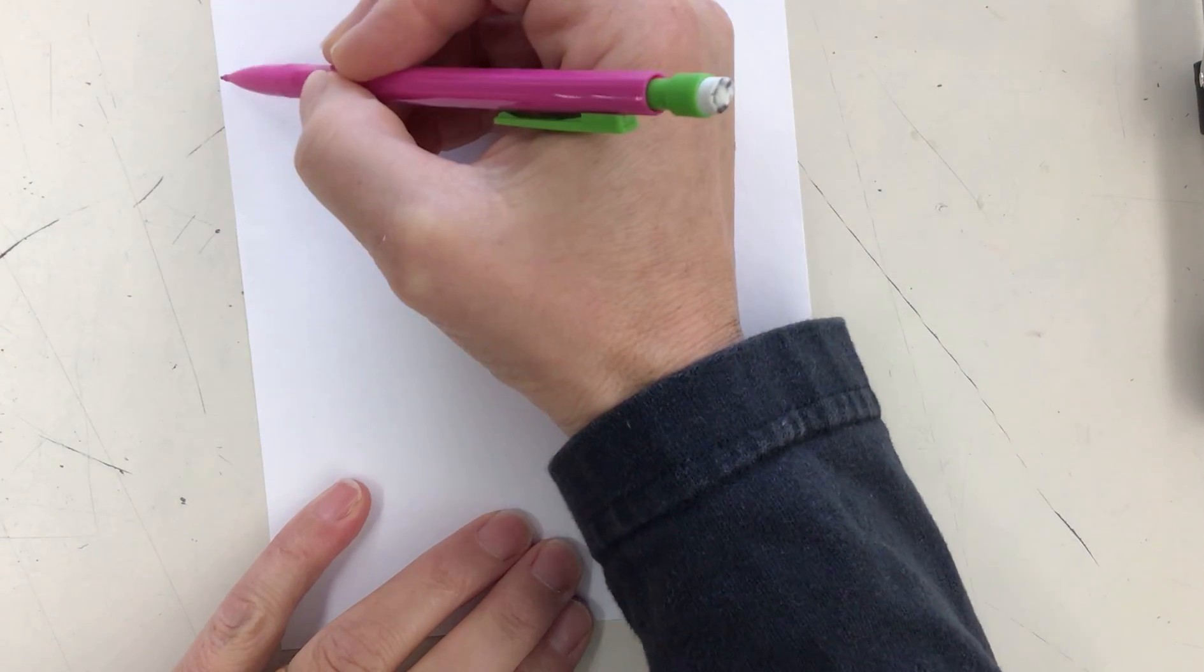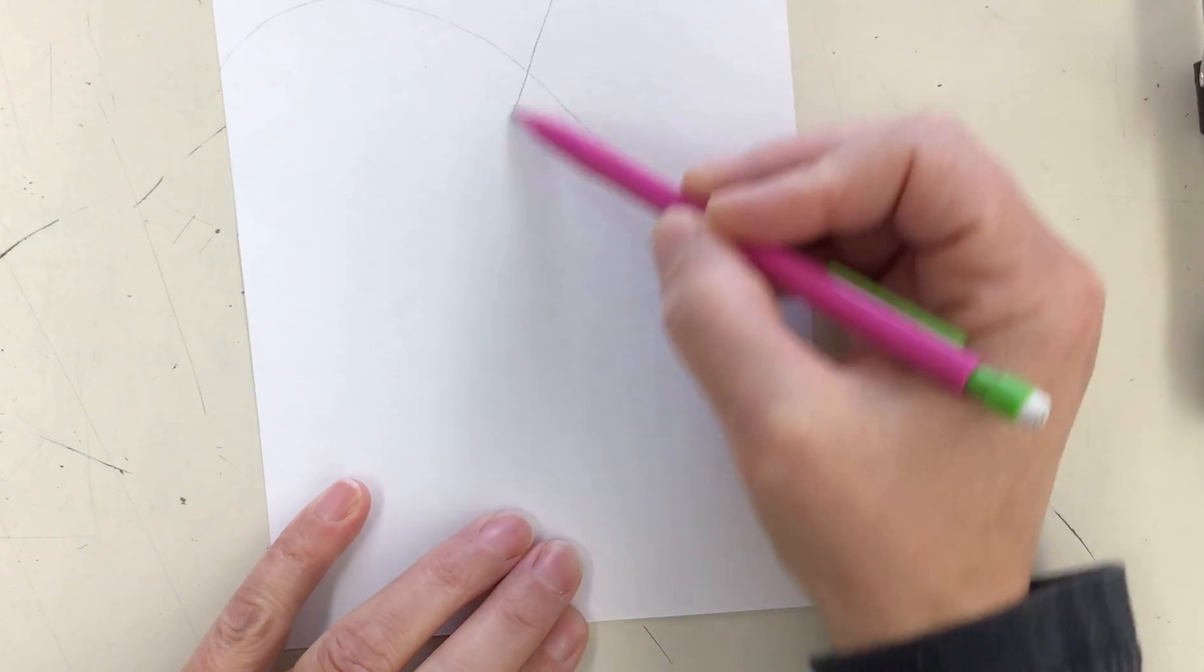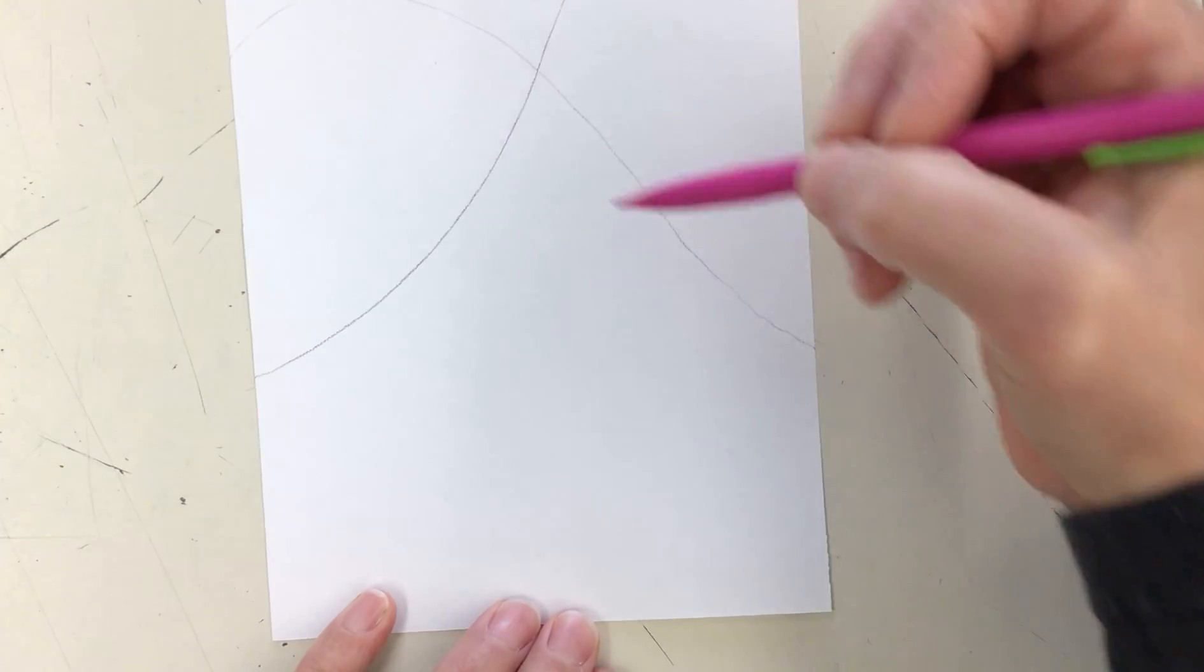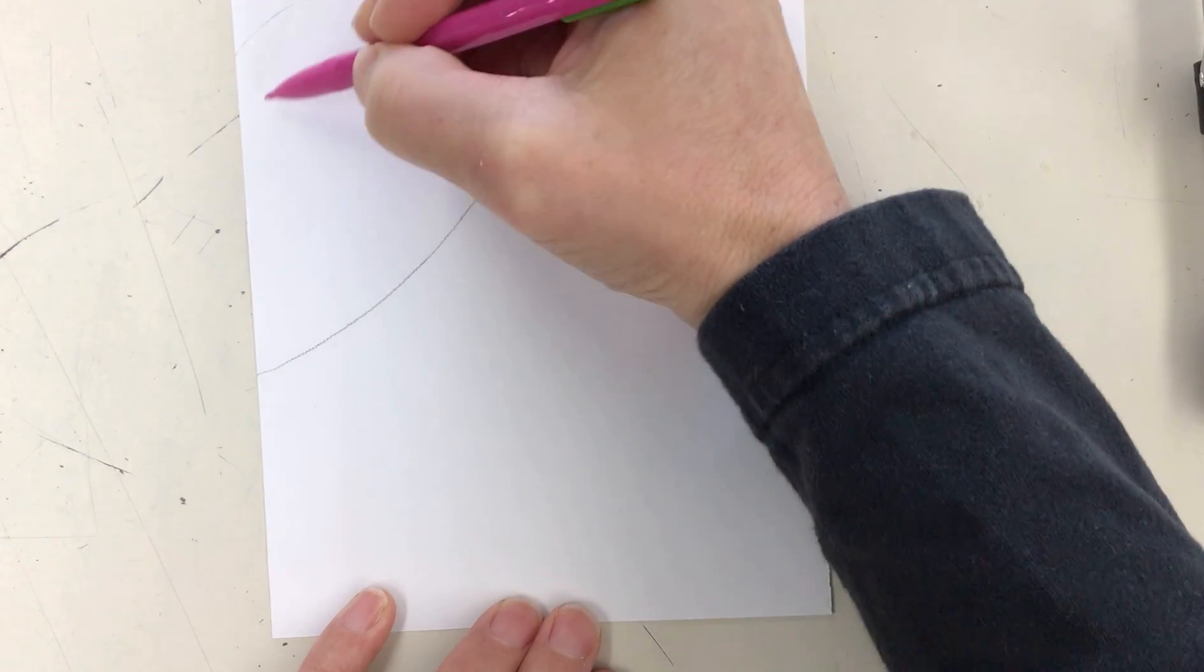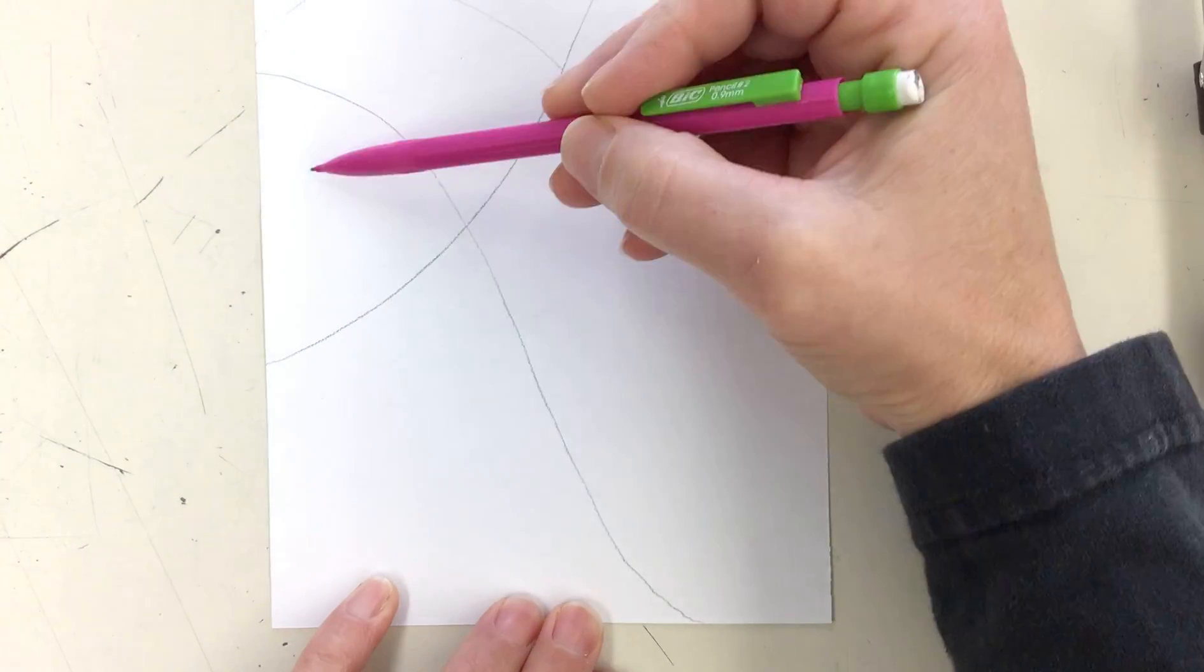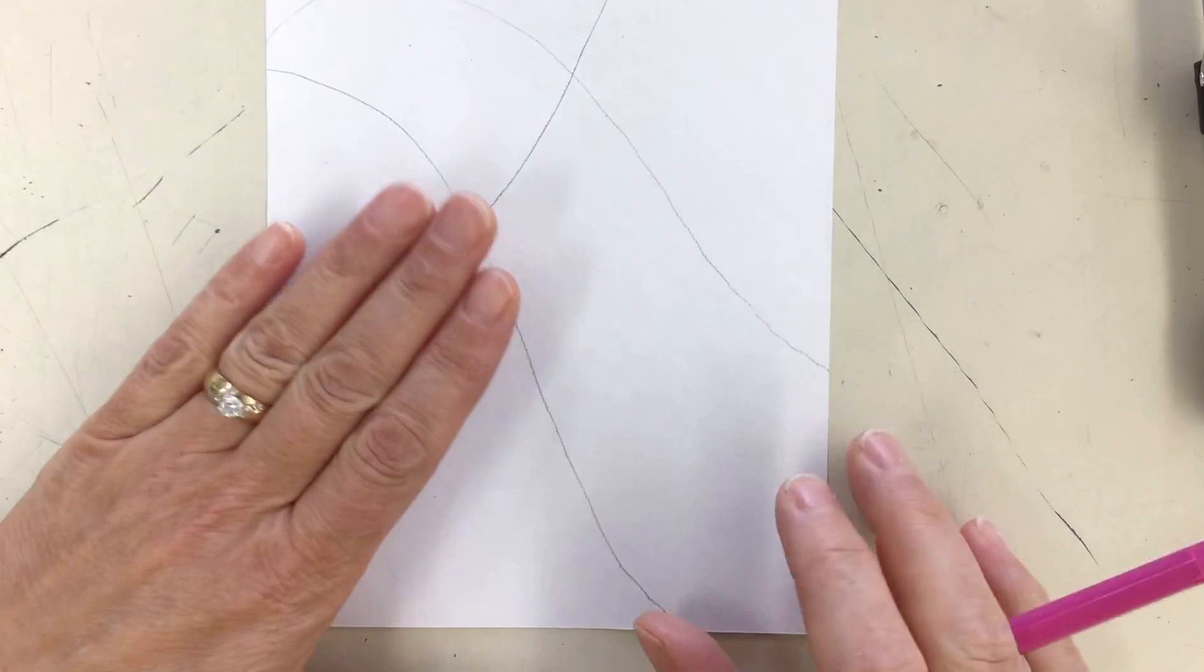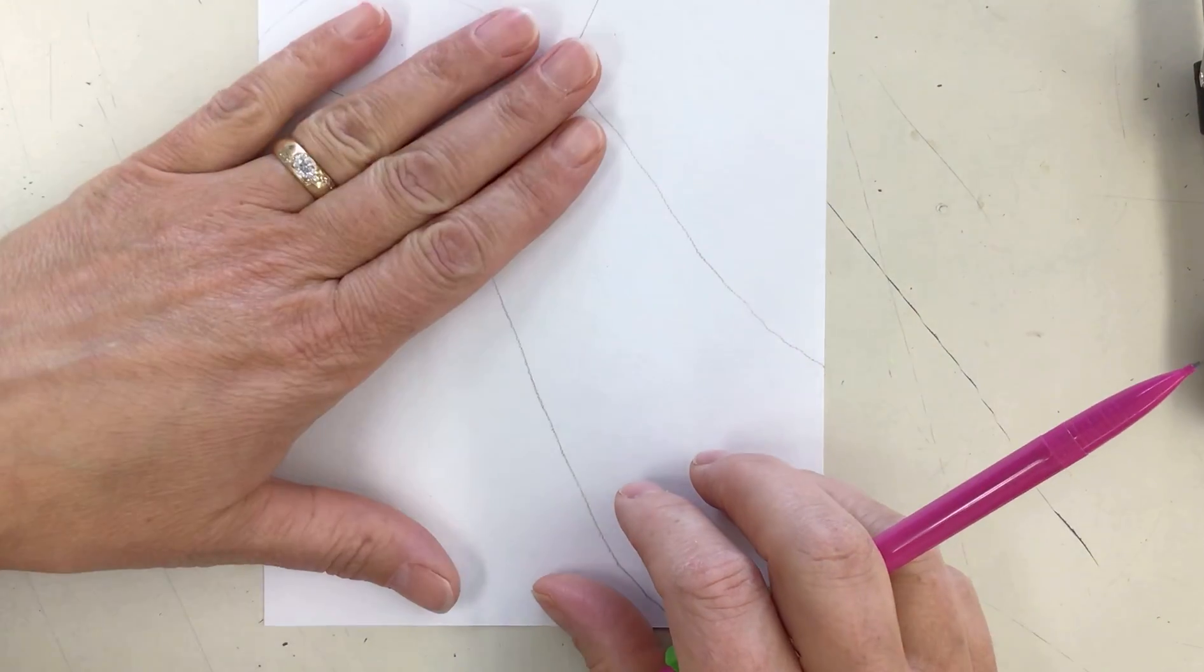You can do any type of division in here. If you want to do something like this with different lines, you can do this as well. One, two, three, four, five, six. It is completely up to you how you want to divide your paper.